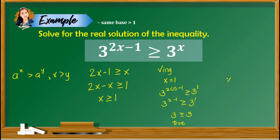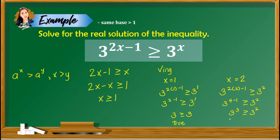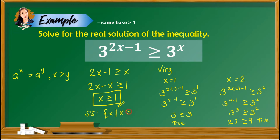Let's also check x equals 2. Substituting: 3 raised to 2 times 2 minus 1 greater than or equal to 3 raised to 2. This gives 3 raised to 3 greater than or equal to 3 squared, which is 27 greater than or equal to 9 — also true. Since both checks are true, we can conclude the solution is x is greater than or equal to 1, or the set of x such that x is greater than or equal to 1.